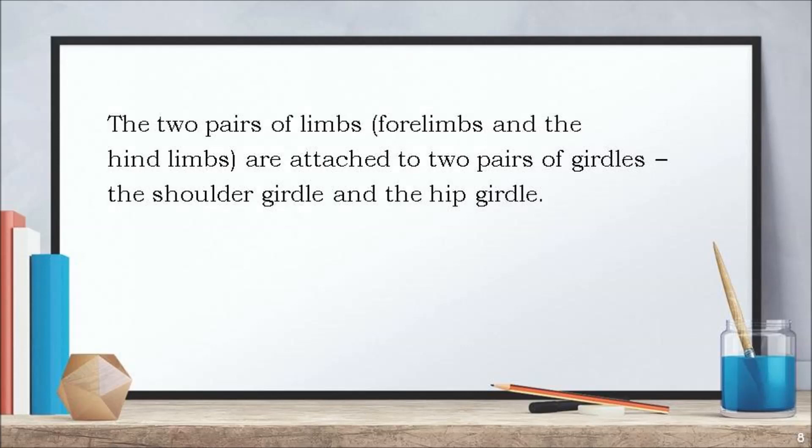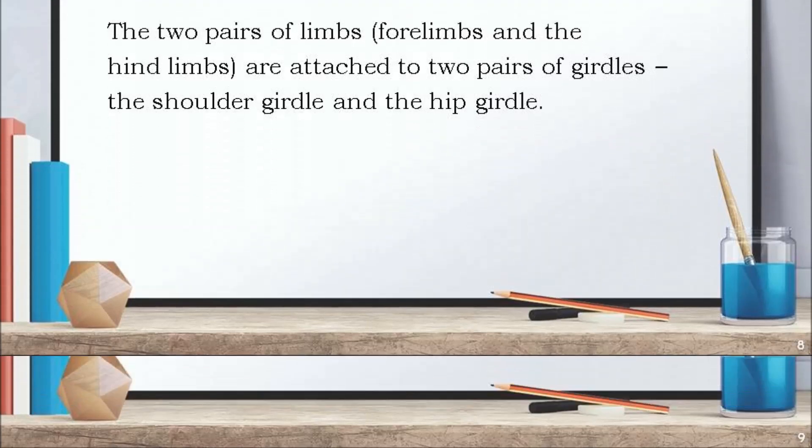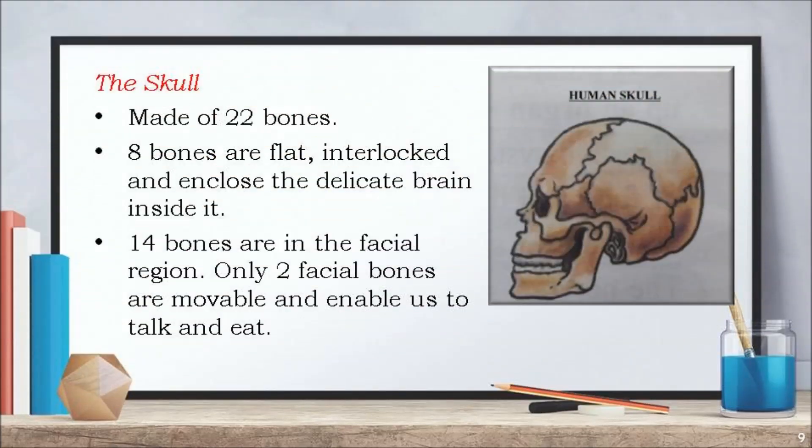The skull is made of 22 bones. 8 bones are flat, interlocked and enclose the delicate brain inside it. 14 bones are in the facial region. Only two facial bones are movable and enable us to talk and eat.